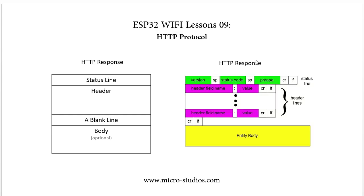Now let's take a look at the response part. For the status line, the first thing is the HTTP version — the server returns the version first. After one space, it will return the status code, after the server processes the HTTP request. After one space, there are a few words to describe the status — a short description for the status code. Then there is a header part of the server, which describes the features of the server and what the server can do for the browser.